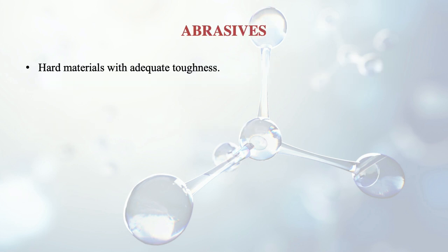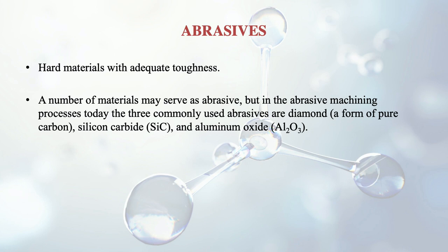Abrasives are hard materials with adequate toughness — they may be hard on the outside but with certain softness inside so that they don't break. In abrasive machining processes, three types are used: diamond, which is a form of pure carbon; silicon carbide (SiC); and aluminum oxide (Al₂O₃). Diamond has a hardness of 10 on the Mohs scale but is very high cost, used only for applications that justify its higher cost. Diamond is one of the natural abrasives found at the earth's surface.